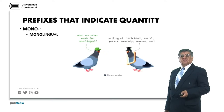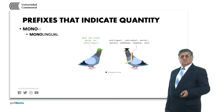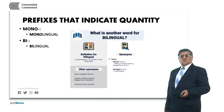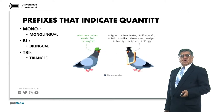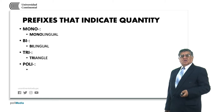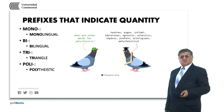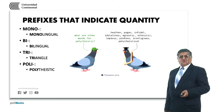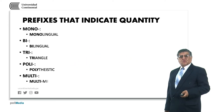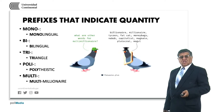Number prefixes: mono- means just one, as in monolingual. Bi- means two, as in bilingual. Tri- means three, as in triangle. Poly- as in polytheistic — describes a person that will have many gods to adore. Multi- means many, as in multi-millionaire — meaning many millions.